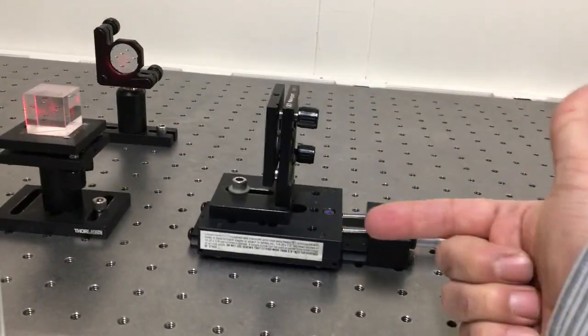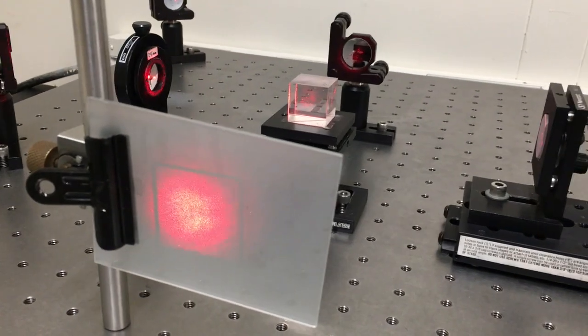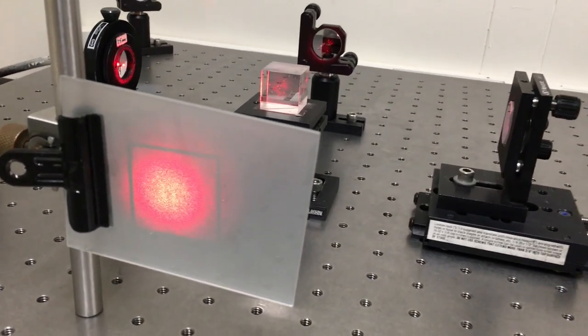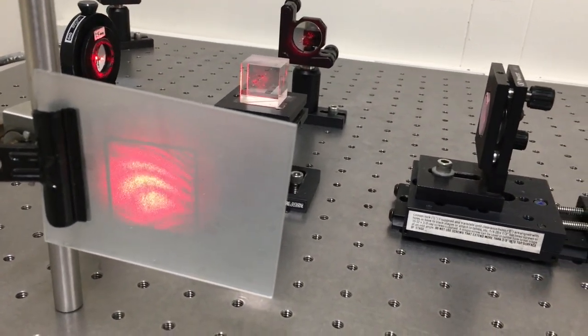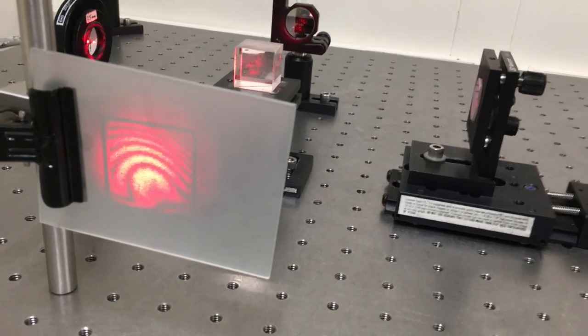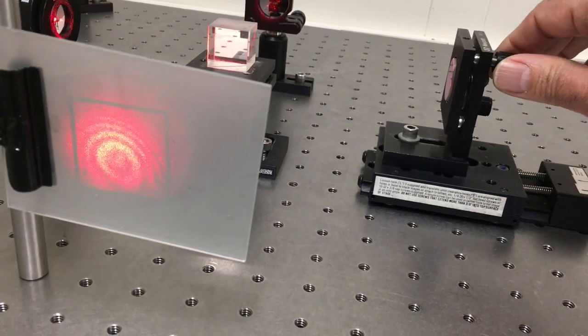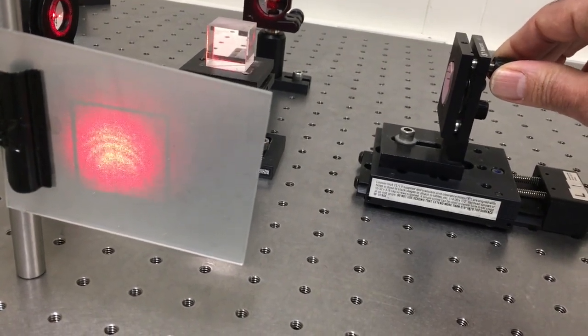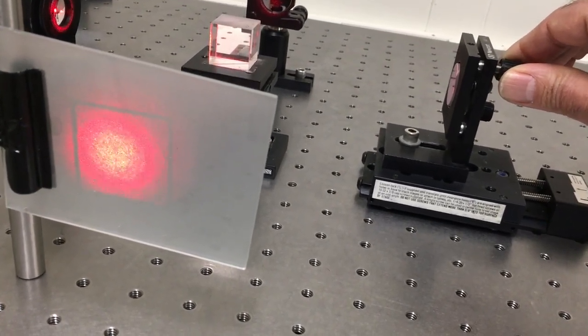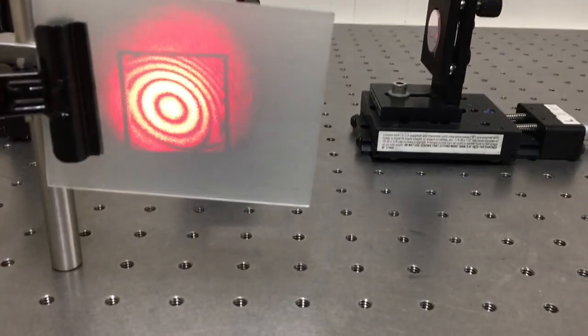I'm going to keep translating it in this direction a few more millimeters. And we see, as I do that, our ring pattern now reappears. I'm going to make a slight adjustment to the mirror to get it centered on the screen. Alright, now we're back to looking at a ring pattern again.